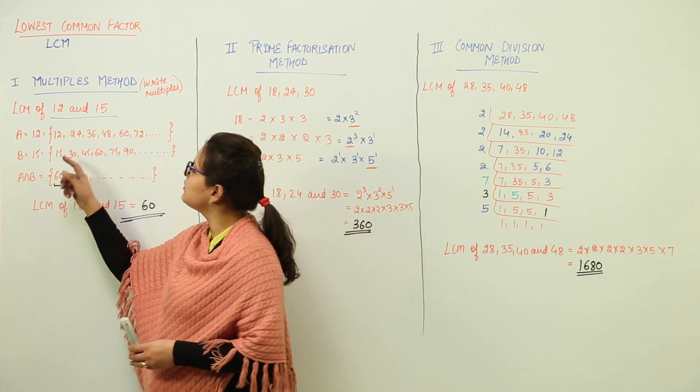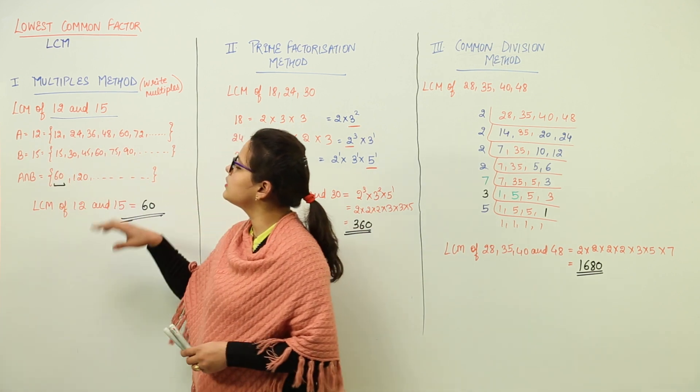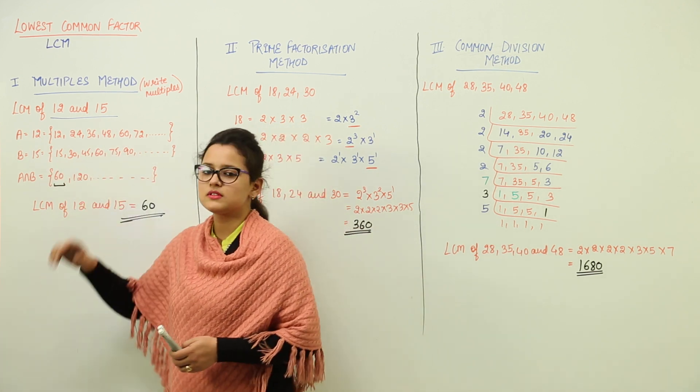So now, similarly, we have written down the factors or you can say the multiples for set B.